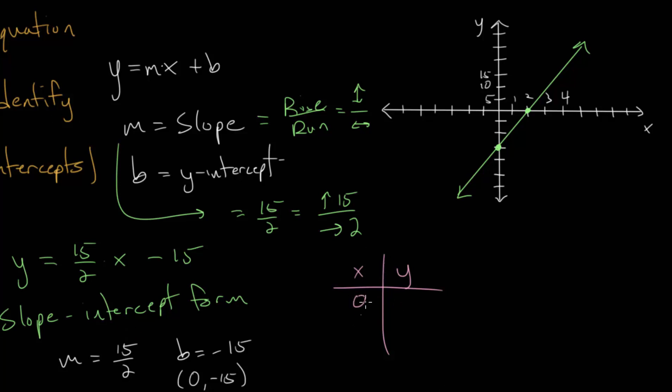If we plug in an x value of 0, we can see that y would be negative 15. And if we plug in a y value of 0, then we essentially will have to solve an equation. We'll add 15 to the other side. So this will be 15 is 15 over 2 multiplied by x. Multiply each side by 2 and divide by 15 to get x is equal to 2. So we found our two intercepts. This is our y-intercept. This is our x-intercept.